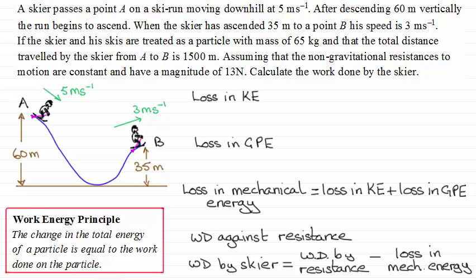So we start off then by working out what the loss in kinetic energy is. And that's going to be the kinetic energy at A minus the kinetic energy at B. So knowing that kinetic energy is a half mv squared, then the kinetic energy at the start at A is going to be half times the mass which is 65 times v squared. So that's going to be 5 squared. And then from this we subtract the kinetic energy at B, which again will be a half m, half times 65 for the mass, times v squared. So we've got 3 squared there.